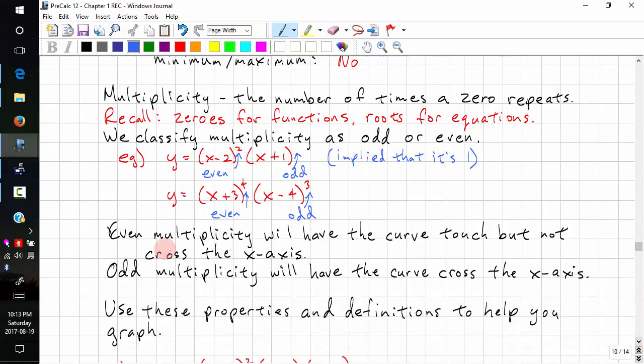So a property of even multiplicity. Even multiplicity will have the curve touch, but not cross the x-axis. This is also called bounce.